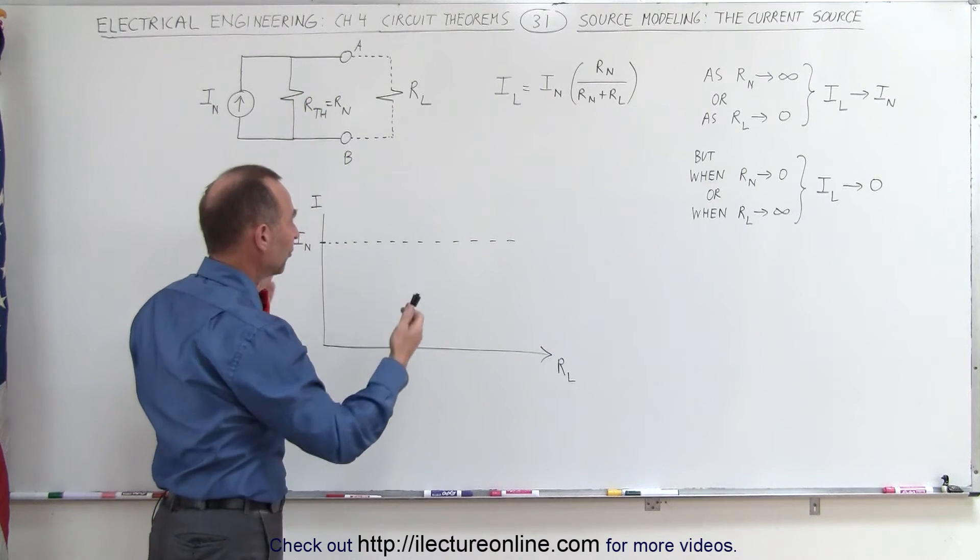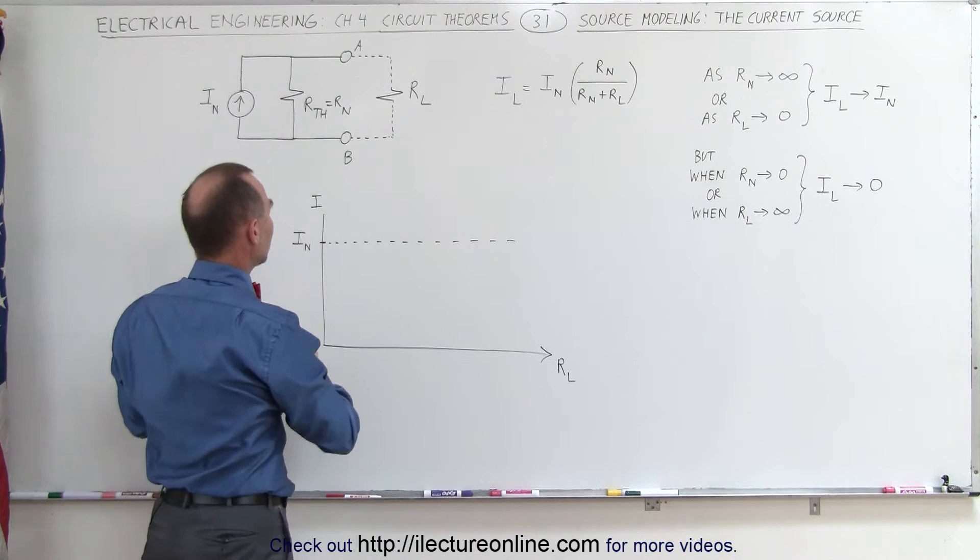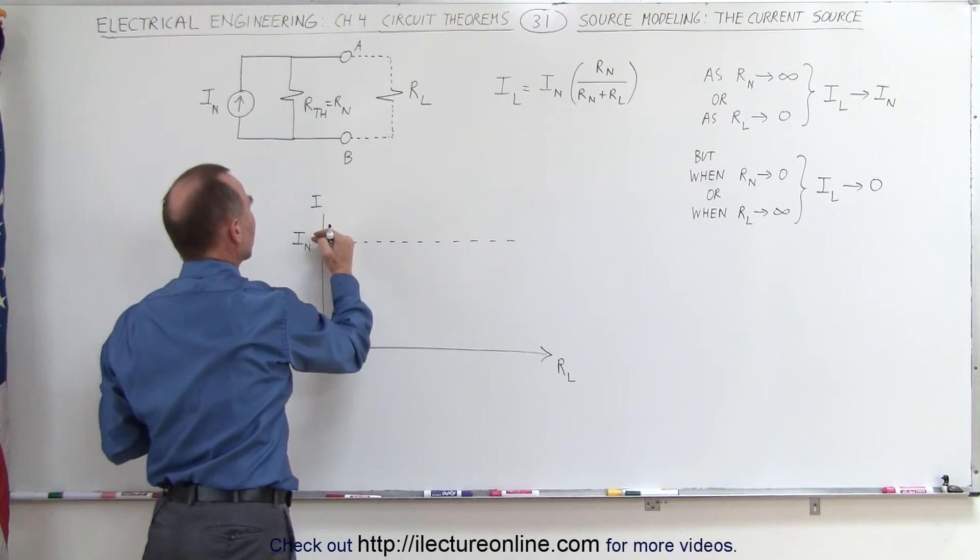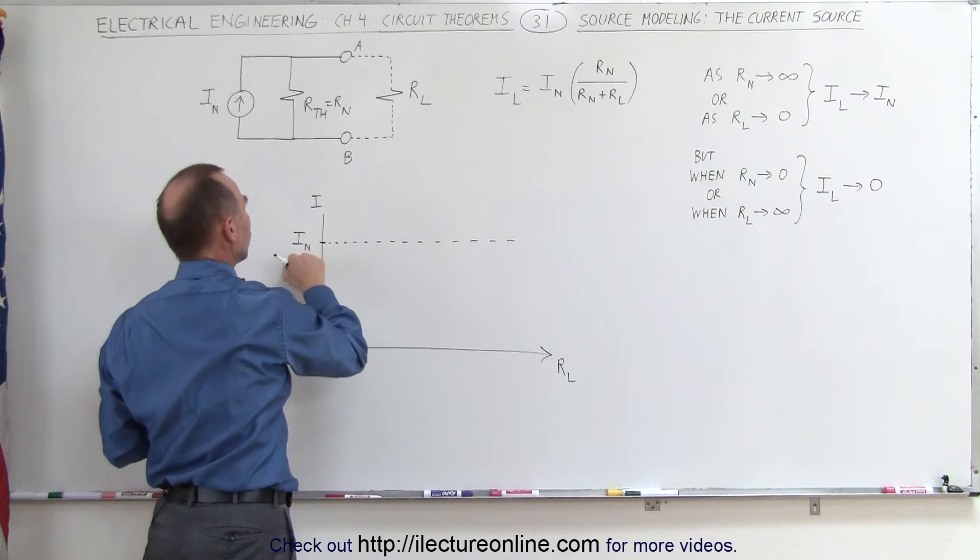If we were to graph it like this, the graph will then look as follows. If the load resistor goes to zero, we reach maximum current, meaning the current will be equal to the Norton current.